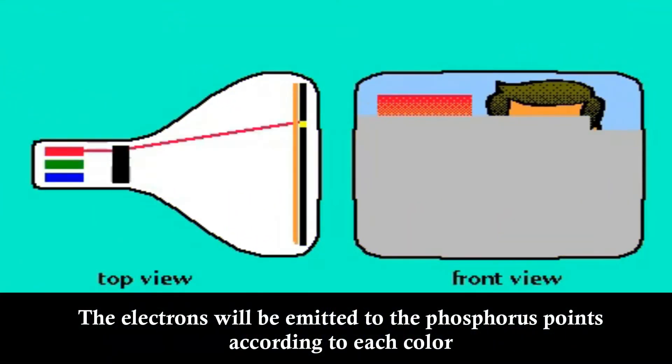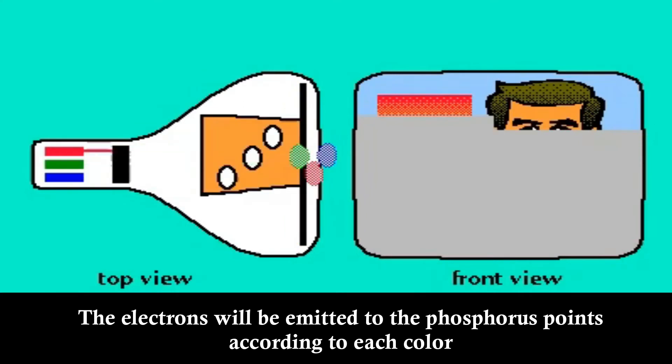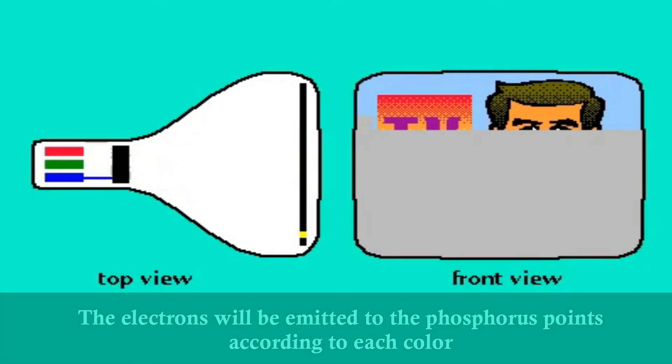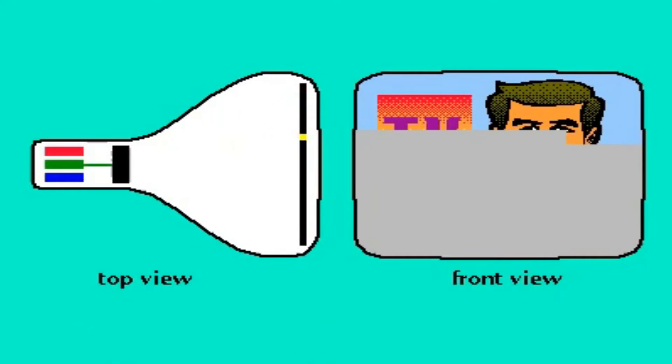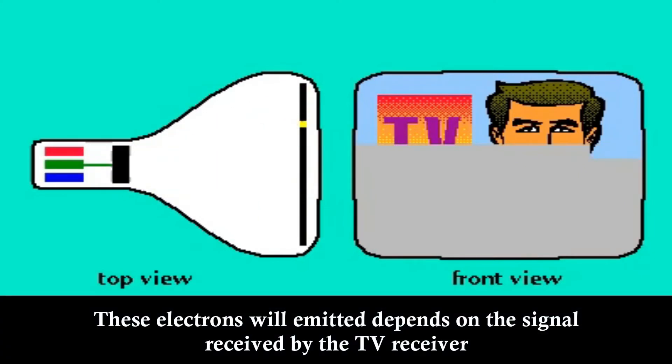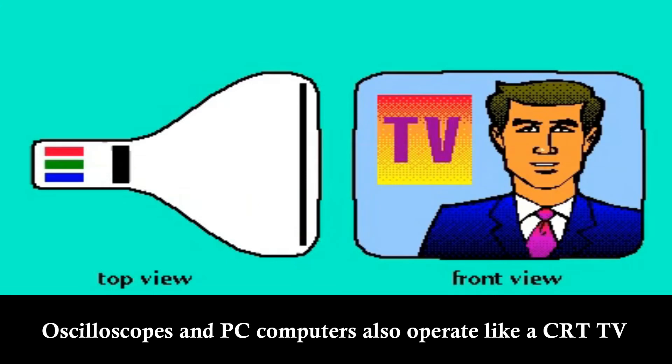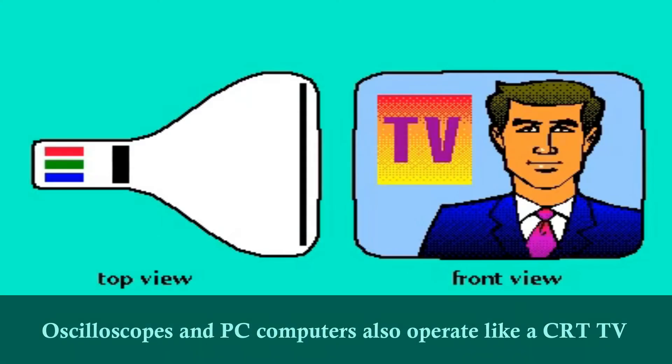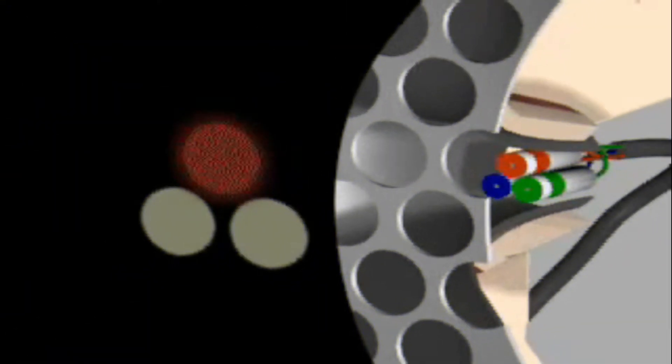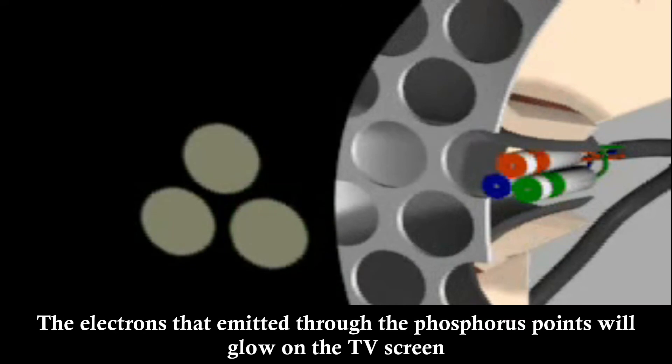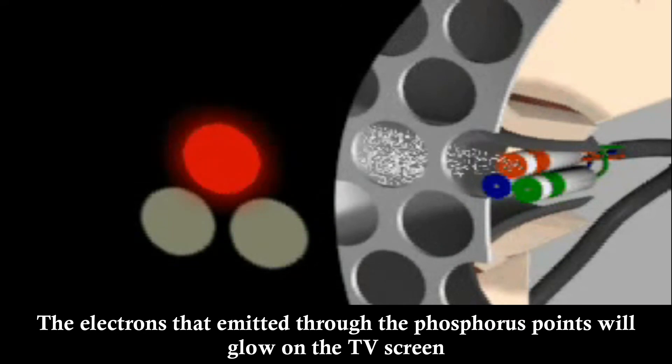The electrons are emitted to the phosphorus points according to each color. These electrons are emitted depending on the signal received by the TV receiver. The electrons that reach the phosphorus points will glow on the TV screen.